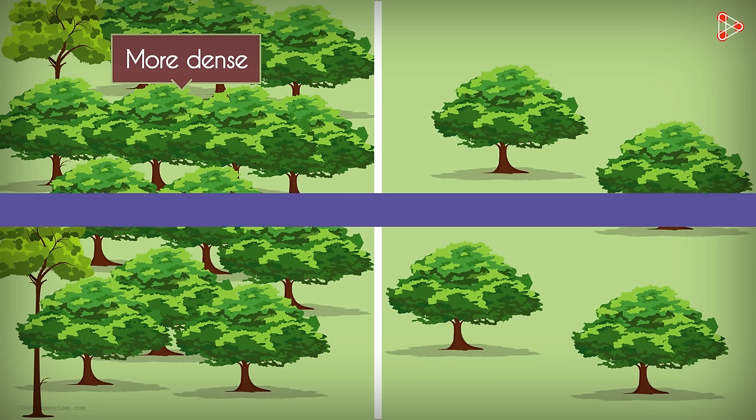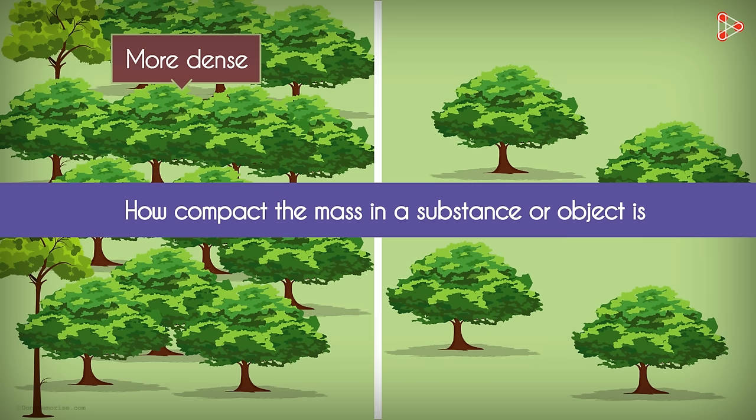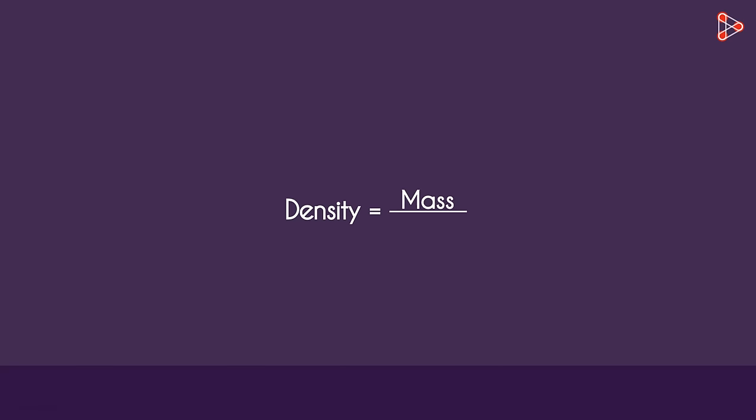Density is simply the measure of how compact the mass in a substance or object is. If we have to go by its scientific definition, we would say that it's mass per unit volume.